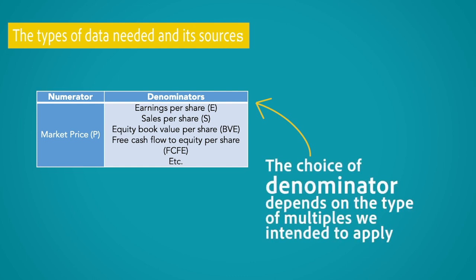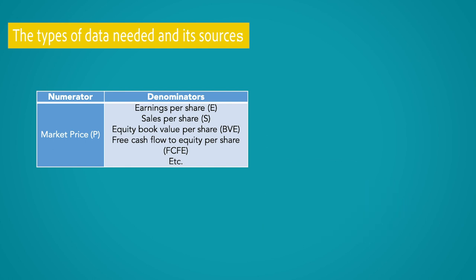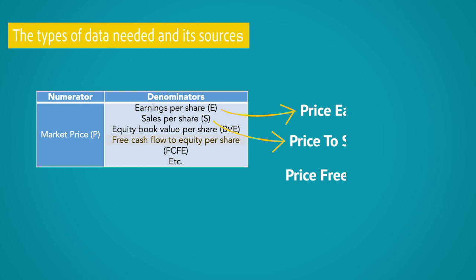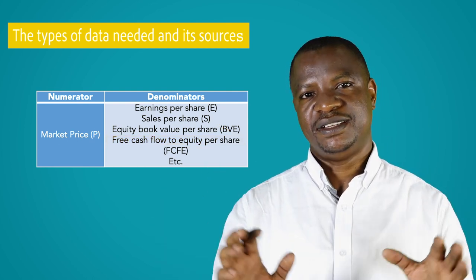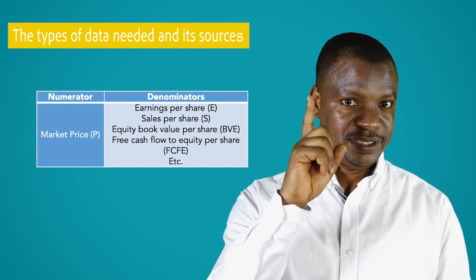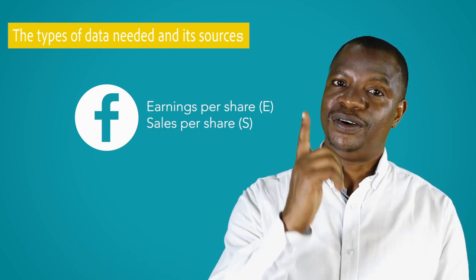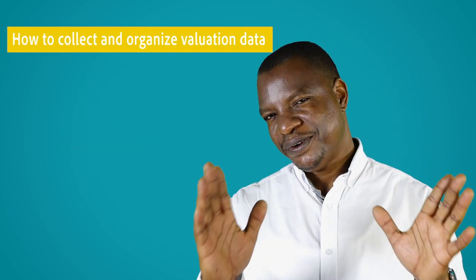The choice of denominator depends on the type of multiple we intend to apply — for example, earnings per share if we intend to apply the price-earnings multiple, or sales per share if we intend to apply the price-to-sales multiple. For a more accurate valuation, it is recommended that we use several multiples, not just one. In our Facebook case, we will use earnings per share and sales per share for the purpose of valuation.